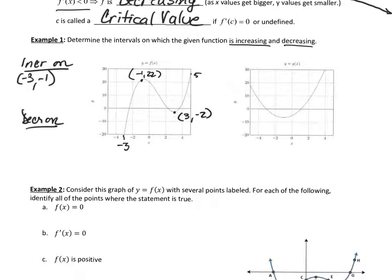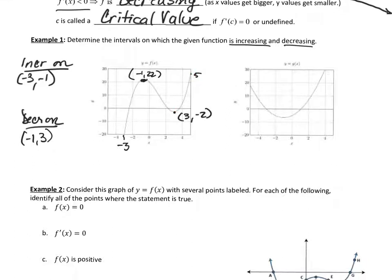The function is decreasing from negative one all the way to three. Once it hits three, the y-values start getting larger again, so it's increasing from three to five. We use a union sign to combine these intervals.